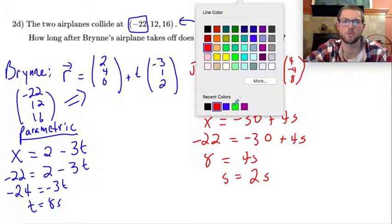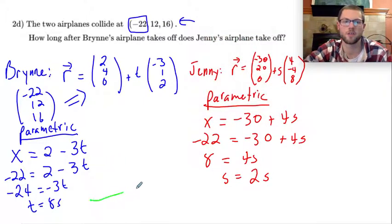And how you get that is you just subtract. Take the difference in these times, 8 seconds minus 2 seconds means that Jenny's airplane took off 6 seconds after Bryn's airplane.